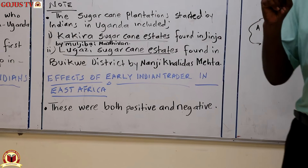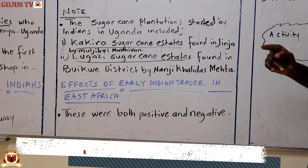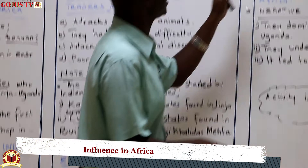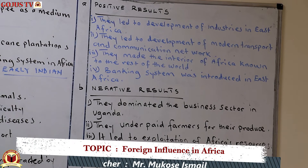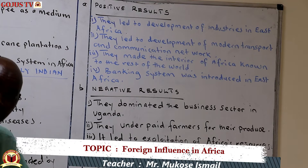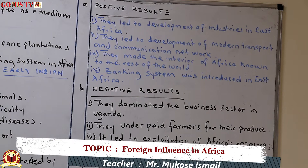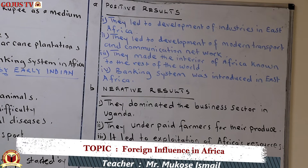Other traders had a great impact on East Africa, both positive and negative. To begin with the positive ones: these people led to the development of industries in East Africa, or industrialization, in the sense that they constructed industries. Currently we have Mukwano Industry in Kampala — that is by Indians — and Kakira Sugar Works in Jinja.